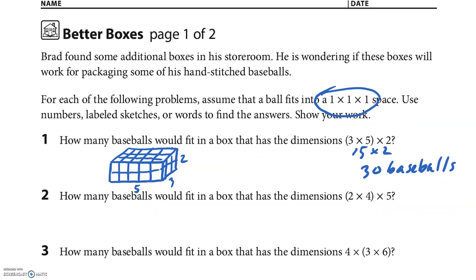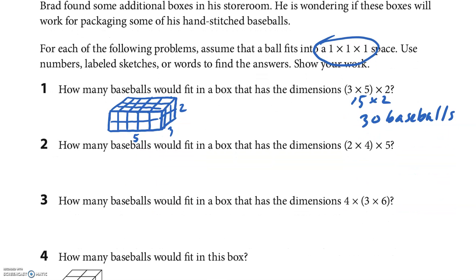Let's go to the next one. How many baseballs would fit in a box with dimensions of 2 by 4 by 5? I could multiply 2 times 5 and make 10, then it's just 10 times 4. I'm going to go the order they give me: 2 times 4 is 8 times 5 is 40. 40 baseballs.